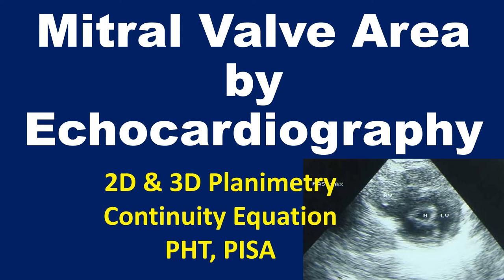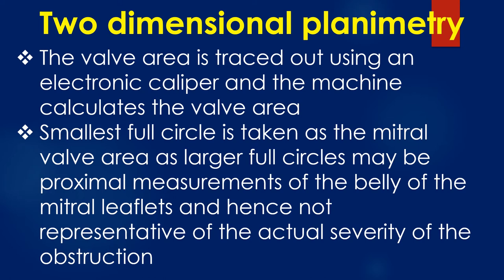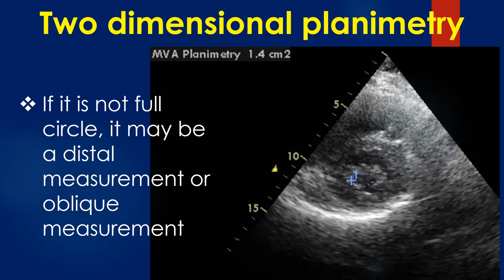This is a discussion on the assessment of mitral valve area by echocardiography using multiple methods. Though mitral valve area can be measured by multiple methods, the commonly used ones are two-dimensional planimetry and the pressure half-time method because of their ease of performance. In two-dimensional planimetry, the valve area is traced out using an electronic caliper and the machine calculates the valve area. The smallest full circle is taken as the mitral valve area, as larger full circles may be proximal measurements of the belly of the mitral leaflets and not representative of the actual severity of obstruction.